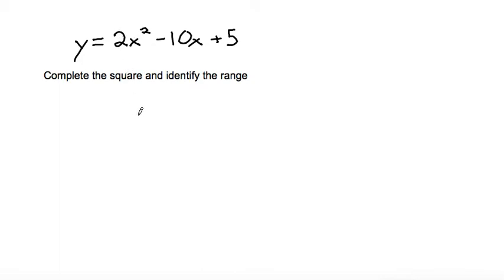The first step is to factor out the coefficient of the x squared term out of only the first two terms. So if we take out a 2, what we'd be left with is an x squared out of the first term and a minus 5x out of the second term, then we'll leave the plus 5 without factoring anything out of it.